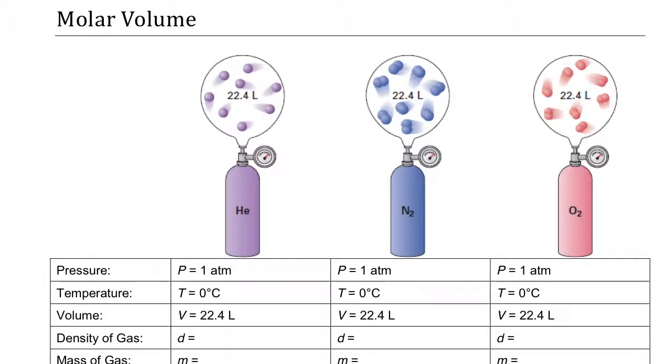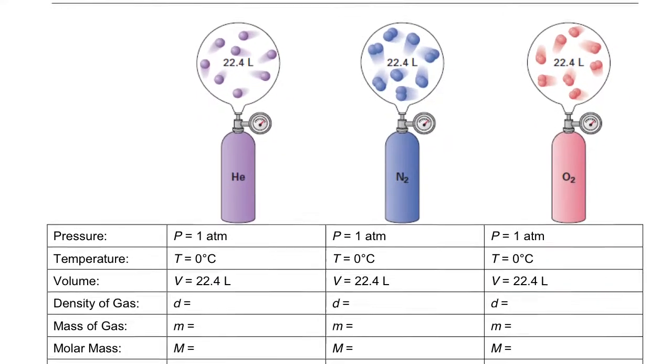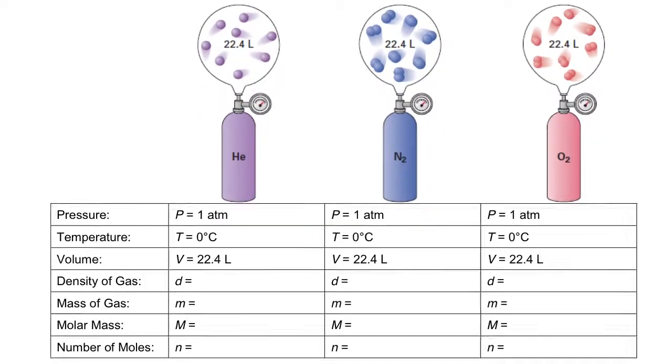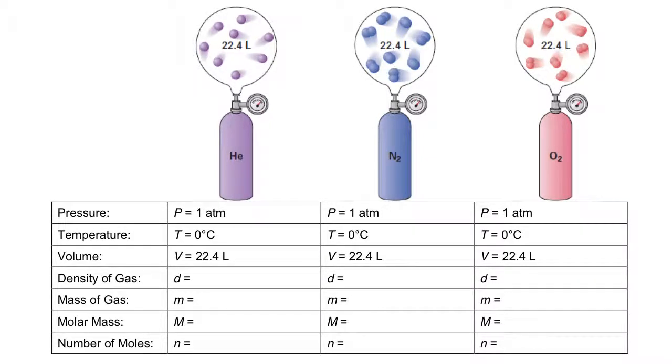If you haven't already done so, please print this handout. We're going to talk about volumes of gases. I want to start off with comparing three different gases: helium, nitrogen, and oxygen. In each of these containers we have the same pressure, the same temperature, and the same volume, and we are going to figure out how many moles of each gas are in these containers.